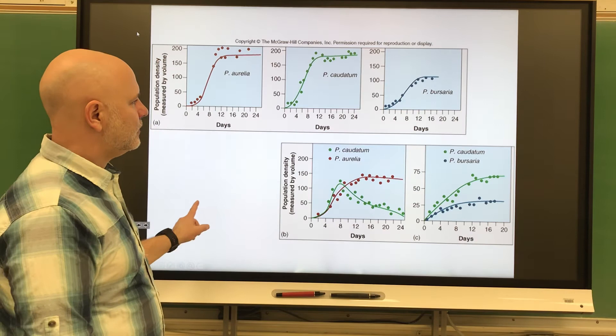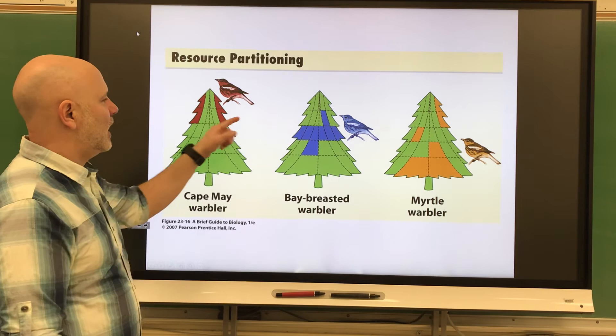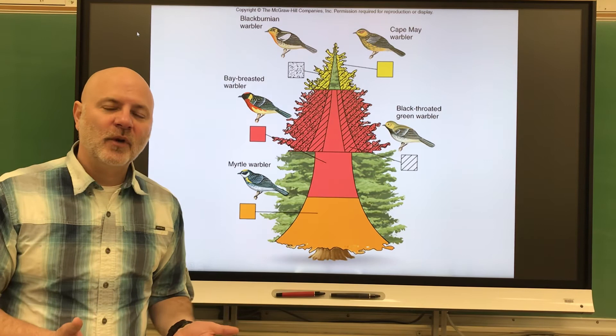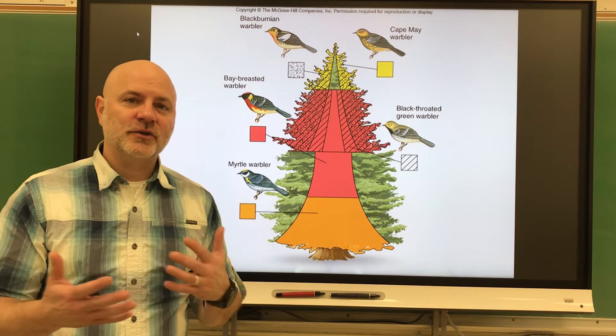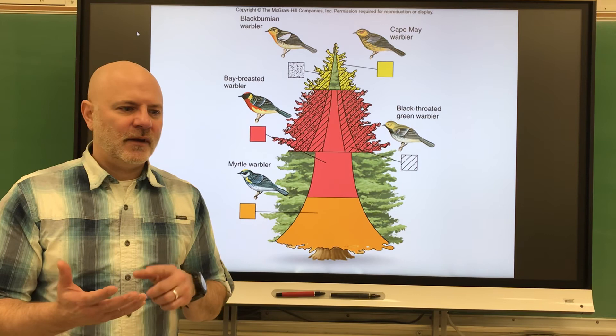Another example of resource partitioning is warblers, which are small songbirds that live and hunt in different areas of a pine tree. In Illinois there are seven different woodpeckers — the downy woodpecker, hairy woodpecker, yellow-bellied sapsucker, red-headed woodpecker, red-bellied woodpecker, northern flicker, and pileated woodpecker. You might think they'd all go after the same resource — insects in trees — but they are all different sizes, listed in order from smallest to largest, and they live in different areas of trees or feed on different types of trees.